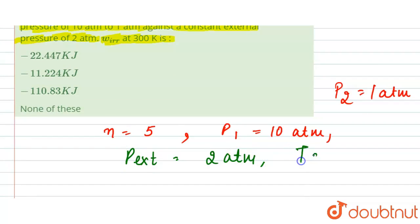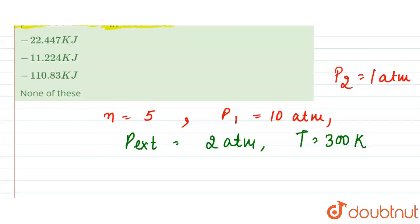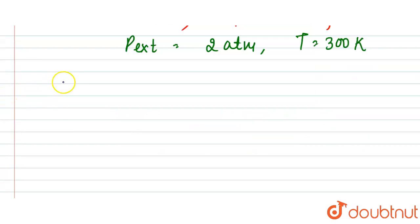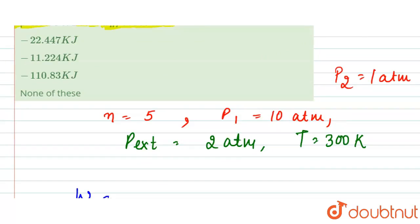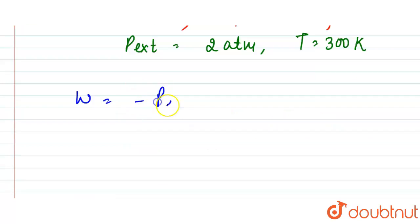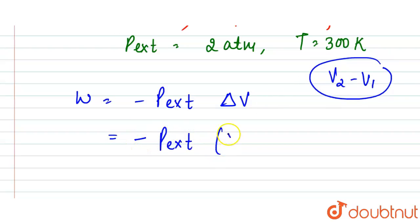So here if we write about the work, when the gas expands isothermally and irreversibly, then our work done is equal to minus p external into delta V. Delta V can be written as V2 minus V1, that is the final minus initial, so here it is minus p external times V2 minus V1.